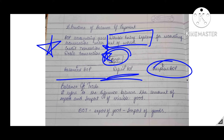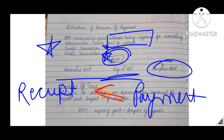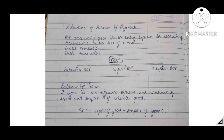This can also be explained in terms of receipts and payments. When receipts of foreign exchange are more than the payment of foreign exchange, that is called surplus BOP. When receipts are less than the payment, that is considered deficit BOP. And when these are equal, it is balanced BOP.